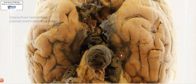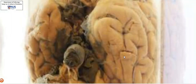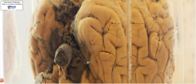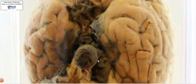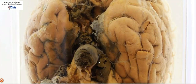Now the reason for this hemorrhage is actually visible over here. You can see this rounded structure — if I were to turn it, you are actually able to appreciate that it's almost like a berry. It's a berry-like shape. This is an example of a ruptured berry aneurysm from the circle of Willis, where there is hemorrhage going into the subarachnoid space. This is one very classical cause for subarachnoid hemorrhage.